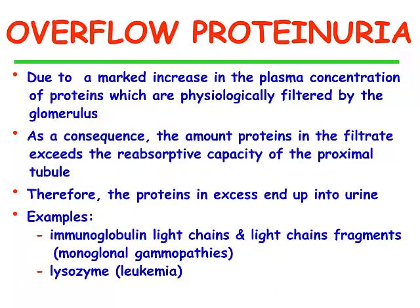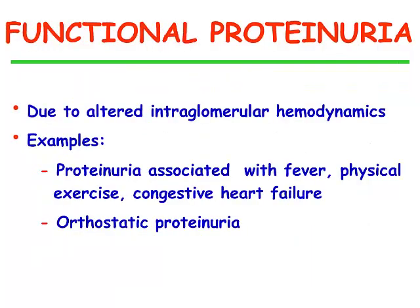Overflow proteinuria is due to a marked increase in the plasma concentration of proteins which are physiologically filtered by the glomerulus. As a consequence, the amount of proteins in the filtrate exceeds the absorptive capacity of the proximal tubule, and the protein excess ends up in urine. The best and most common example is the presence of immunoglobulin light chains and light chain fragments in the urine of patients with monoclonal gammopathy. Finally, we have functional proteinuria, which is due mainly to altered intraglomerular hemodynamics. This is seen in patients with fever, after strenuous physical exercise, and in congestive heart failure.